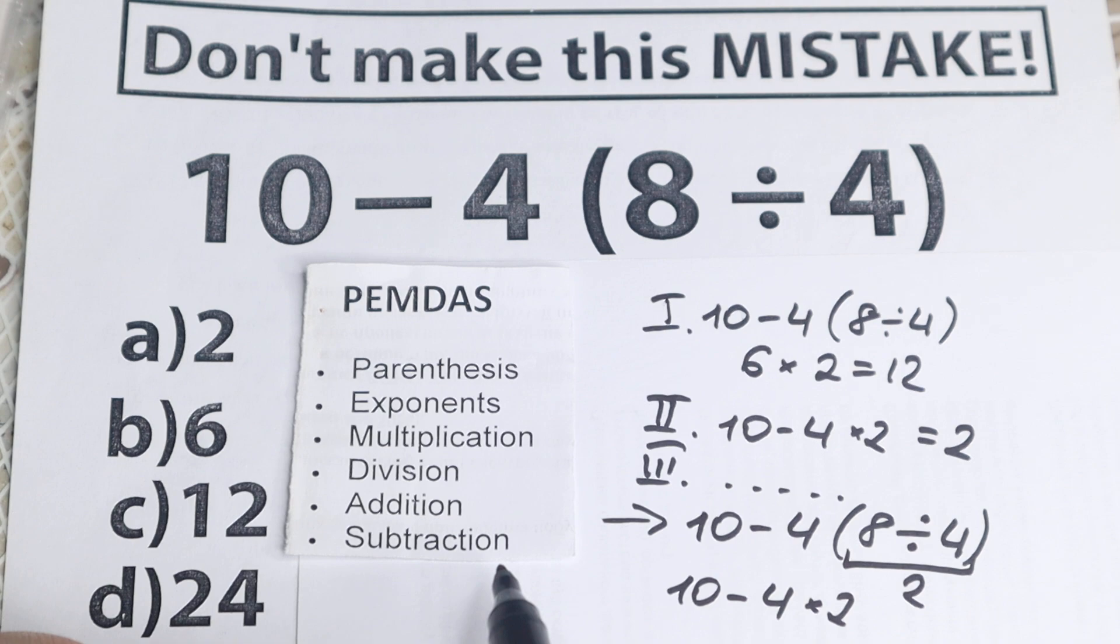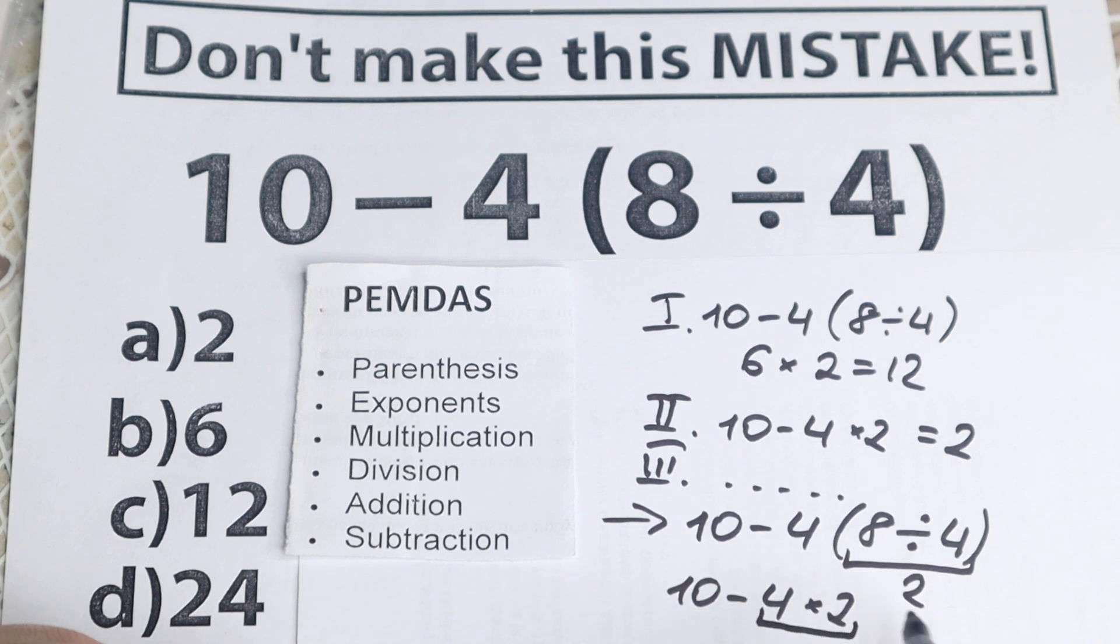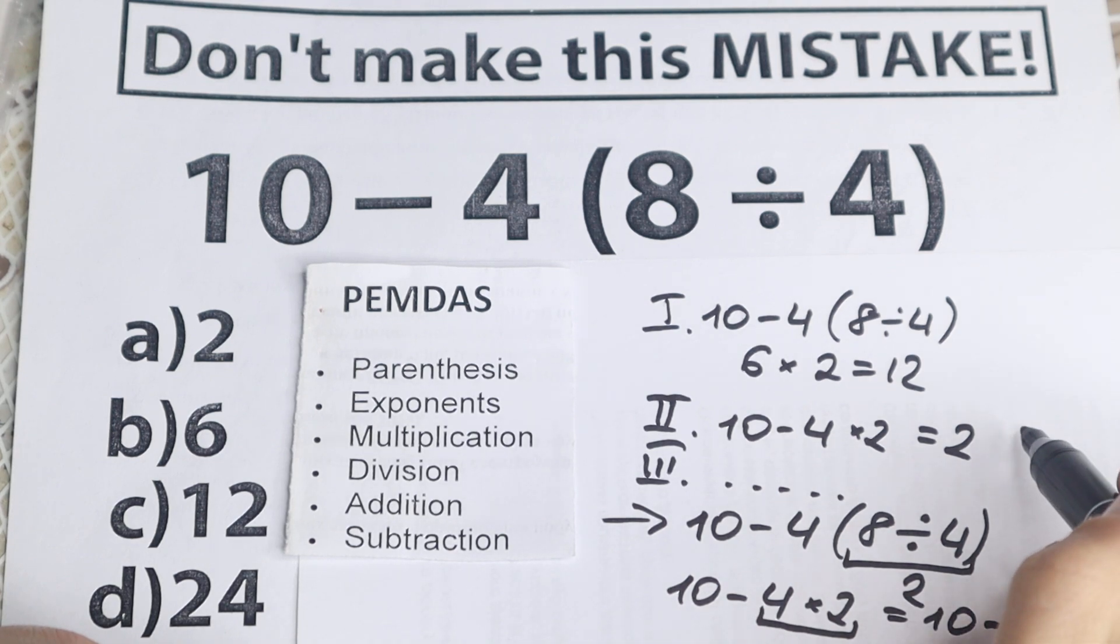The next step is exponents. Are there any squares, cubes right here? No, I don't see any of those, I don't see any exponents, so let's go to the next step. The next step, multiplication. So we need to multiply. 4 times 2 equals 8, so 10 minus 8, and as you can see equals 2. I write this 2 right here, and I write this 2 right here. This is option A. This is 2.